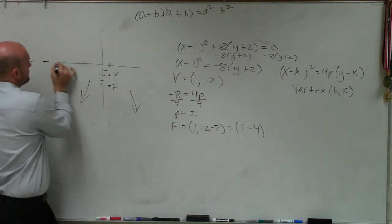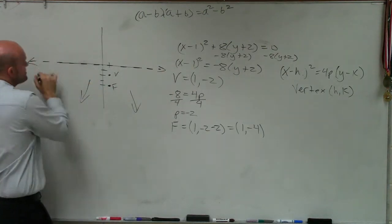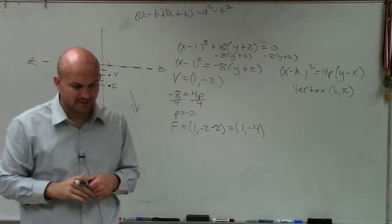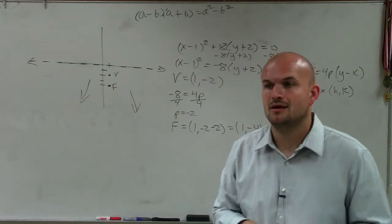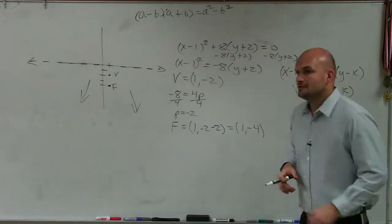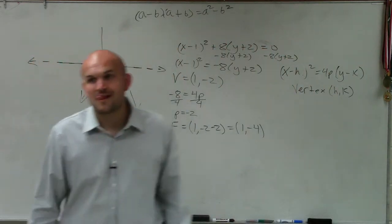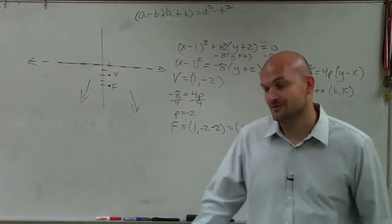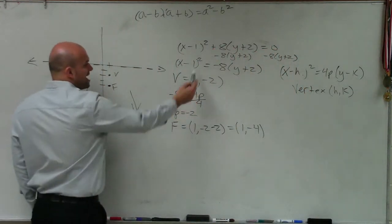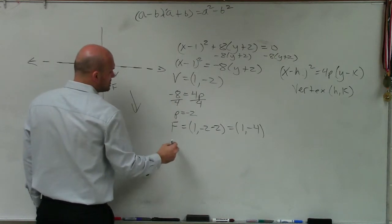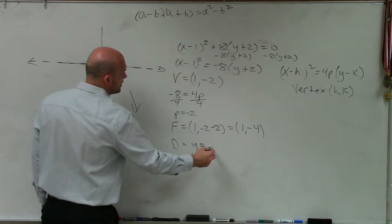Now, this one, remember, the directrix is our little dotted line. And since it's horizontal, Lucas, do you remember, is it going to be x equals or y equals, since it's a horizontal line? Cheater. It's what? What is the line? Oh, the directrix. Yes. y equals, yes. Very good. So, and then, all I'm going to do is add it. So its directrix is y equals 0.